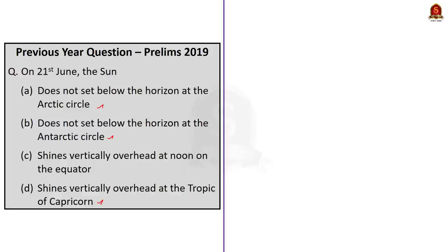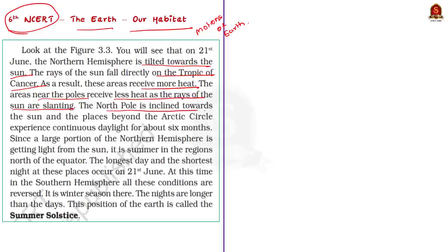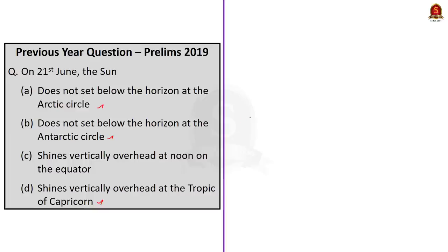This question is directly taken from the sixth standard NCERT book titled 'The Earth Our Habitat', from the third chapter titled 'Motions of Earth'. This is UPSC signaling us aspirants to not leave out any NCERT books. From the actual text: on 21st June, the northern hemisphere is tilted towards the sun. The rays of the sun fall directly on the Tropic of Cancer. The north pole is inclined towards the sun and the places beyond the Arctic Circle experience continuous daylight. Since places beyond the Arctic Circle experience continuous daylight on June 21st, we can infer that the sun does not set below the horizon at the Arctic Circle.